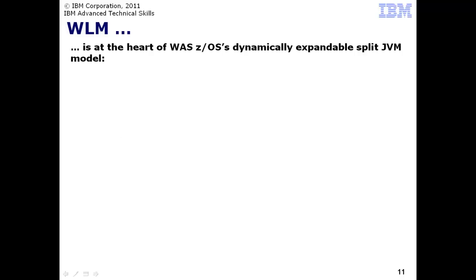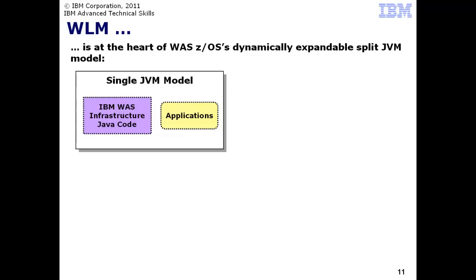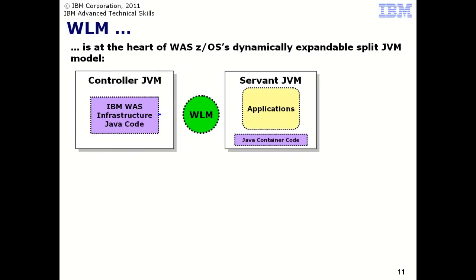ZOS Workload Manager is at the very heart of the WAS-ZOS split JVM model. WAS on other platforms employs a single JVM model, with applications co-resident in the JVM with all the IBM-written Java code that makes up WAS itself. But on ZOS with WLM, the opportunity existed to take it one step further. The JVM is split in two: one JVM, the controller, taking on a portion of the infrastructure code, and the second JVM, the servant, hosting the application and having a layer of application support Java.